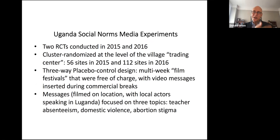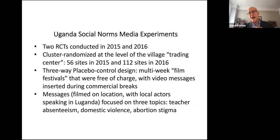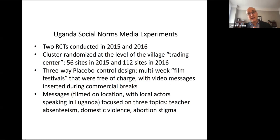We're going to do two randomized trials, one in 2015 and one in 2016. They'll be cluster-randomized at the level of so-called trading centers in very rural areas. A trading center is basically like two unpaved roads that cross. Typical in East Africa are institutions called bibandas — basically video halls, like tiny movie theaters. Typically, men congregate there to watch kung fu movies or soccer, with admission costing about 5 to 10 cents in American currency, relatively inexpensive even for people with very little income.